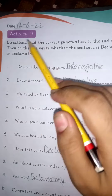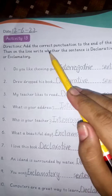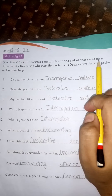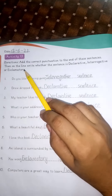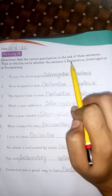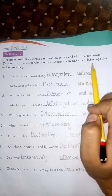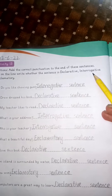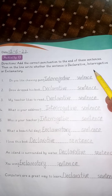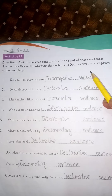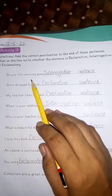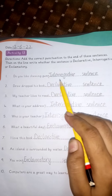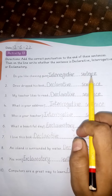Activity thirteen. Directions: Add the correct punctuation to the end of these sentences, then on the line write whether the sentence is declarative, interrogative, or exclamatory. Do you like chewing gum? — this is an interrogative sentence.